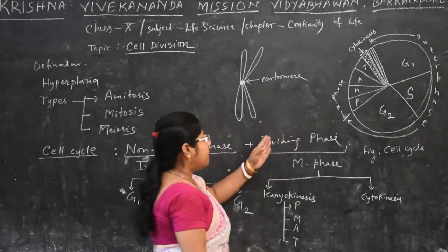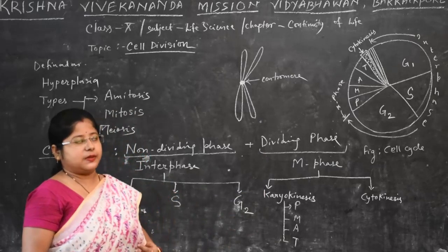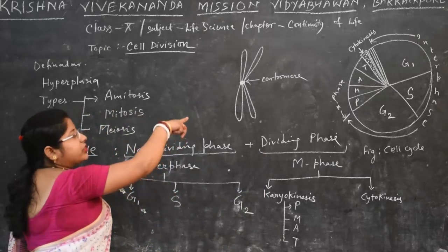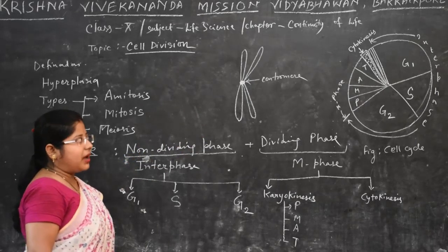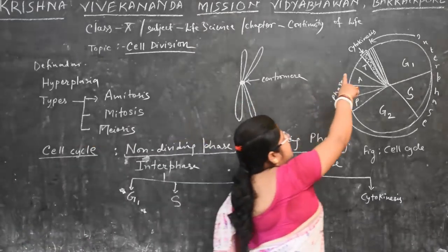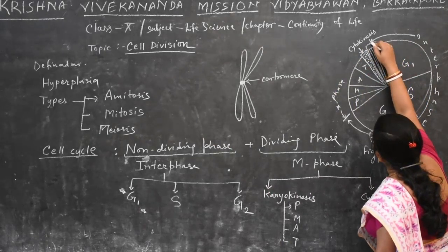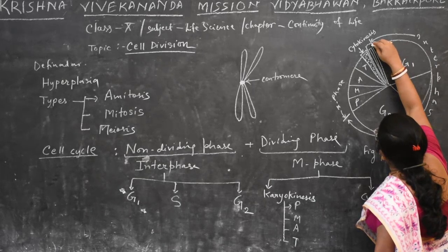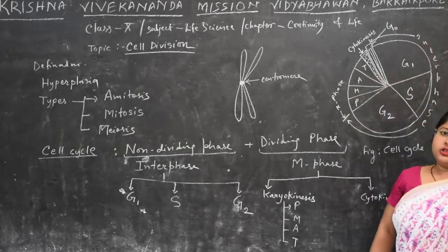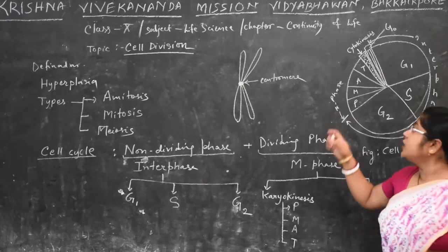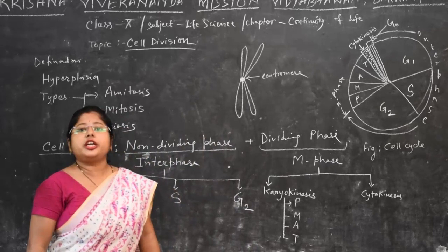That is why we call it the Mitotic phase or M-phase. The entire process goes on in a cyclic manner. After cytokinesis, there is a short phase known as G0 (G-naught) phase.